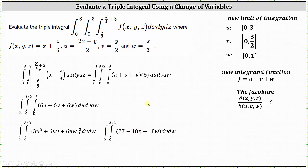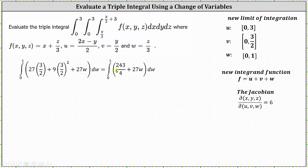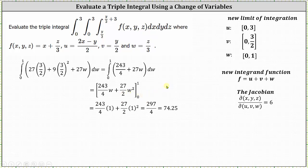When u equals zero, we get zero. Now we integrate with respect to v. Evaluating at v equals three halves gives 27 times three halves plus nine times the square of three halves plus 18 times three halves times w, which simplifies, and big F of zero is zero. Simplifying the integrand gives 243 fourths plus 27w. Integrating with respect to w, the antiderivative is 243 fourths times w plus 27 halves times w squared. Evaluating from zero to one gives a final answer of 297 fourths, or 47.25.